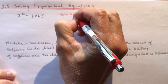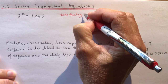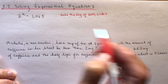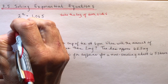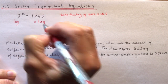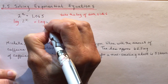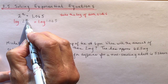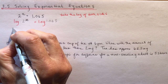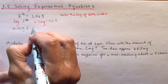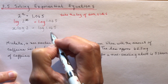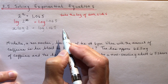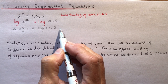Take the log — log base 10 — of both sides. Just like any time we work with an equation, what you do to one side you have to do to the other. So I'm going to write log of 2 to the x equals log of 1.065. Now, using the power law for logarithms, this is the same as x times log 2 equals log 1.065. You can evaluate log of any number on your calculator, and that's where some students get stuck.